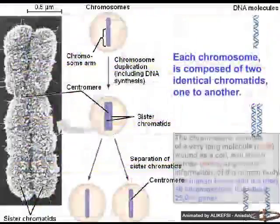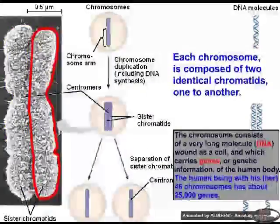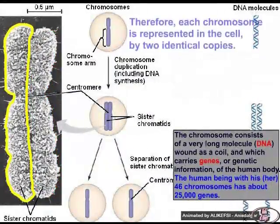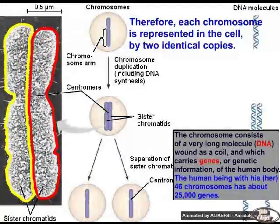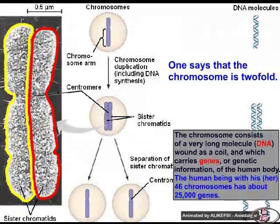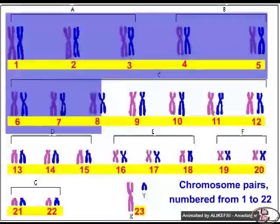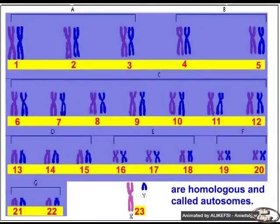Each chromosome is composed of two identical chromatids, one to another. Therefore, each chromosome is represented in the cell by two identical copies — one says that the chromosome is twofold. Chromosome pairs numbered from 1 to 22 are homologous and are called autosomes.